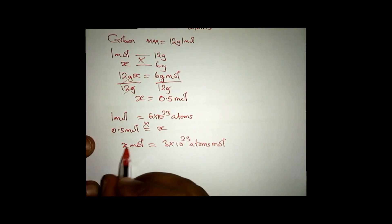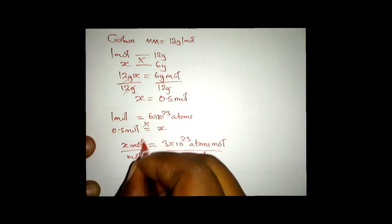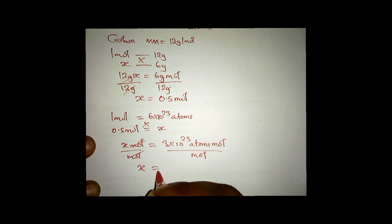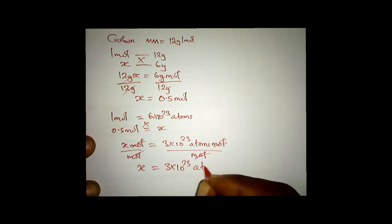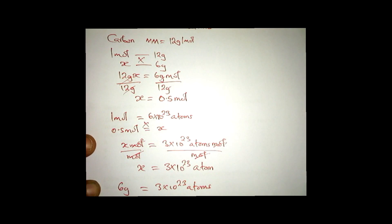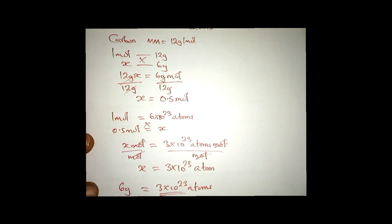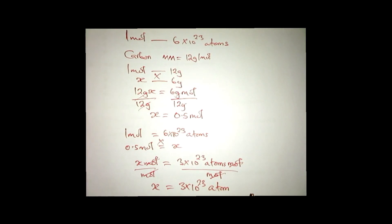You want x, so you divide both sides by moles. The moles cancel and you remain with x equal to 3×10²³ atoms. So 6 grams of carbon has 3×10²³ atoms. Checking our options, we find 3×10²³ — the answer is A.